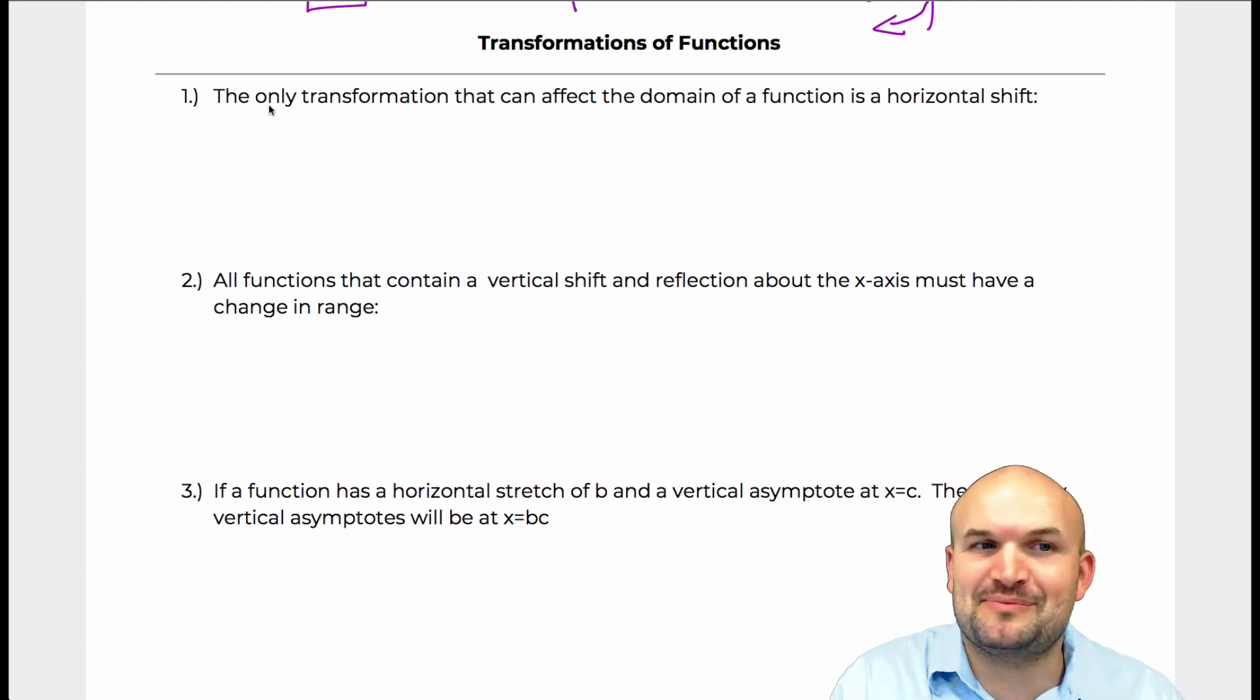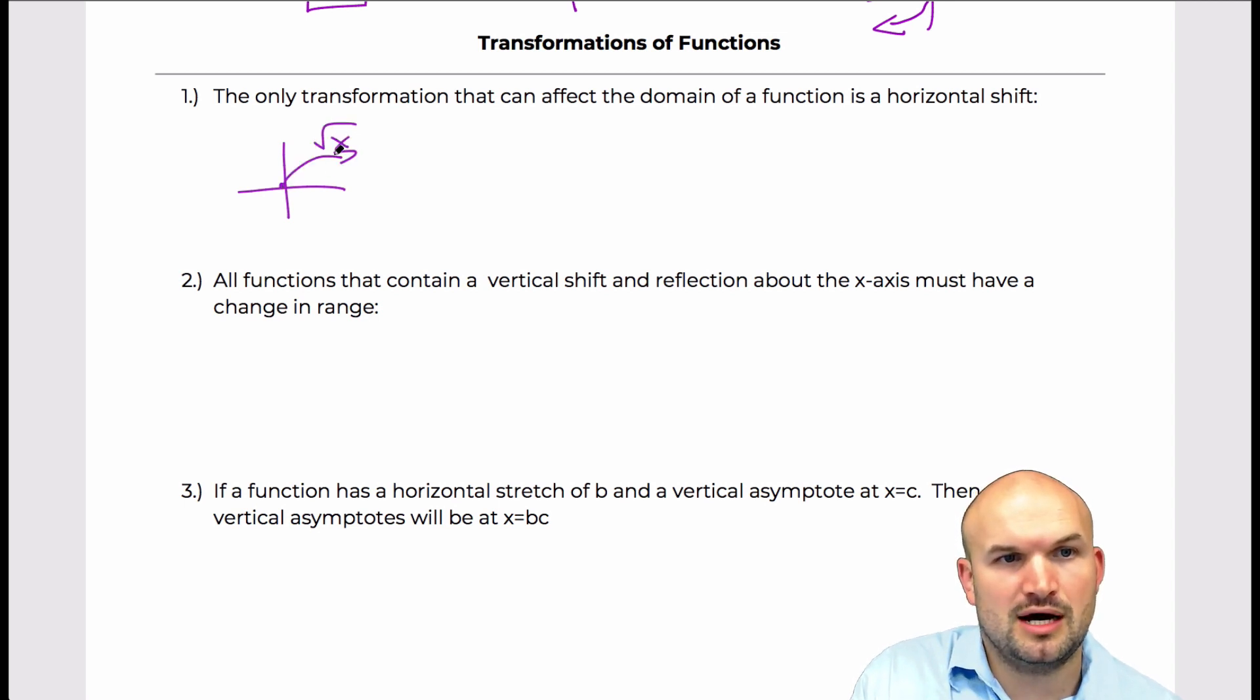So the first example here is basically the only transformation that can affect the domain of a function is a horizontal shift. That's pretty common when we're looking at a function that's restricted on its domain like the square root function. Obviously, if we were to shift this graph left or right, the domain is going to be shifting left and right, right? Because right now the domain is only positive numbers.